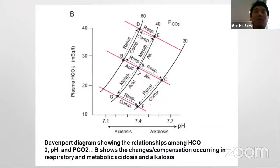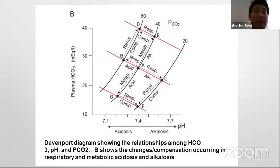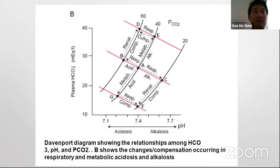Another example: in respiratory acidosis, from point A the patient goes up as CO2 climbs from 40 up to 60. The kidneys then compensate by increasing bicarbonate in the body, and plasma bicarbonate slowly climbs to almost 40 when PaCO2 reaches about 60. This is how our body's buffer and compensation system works — through both respiratory and renal compensation.